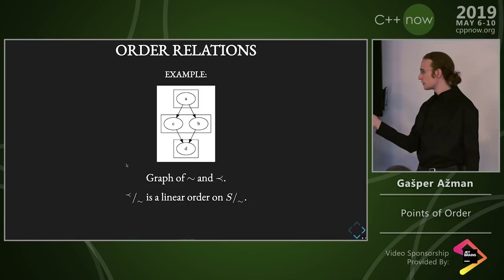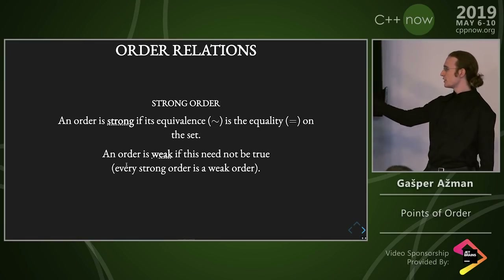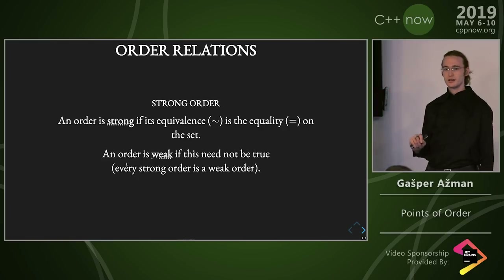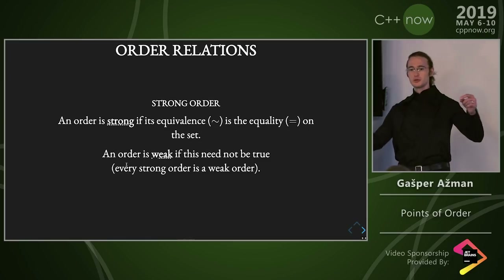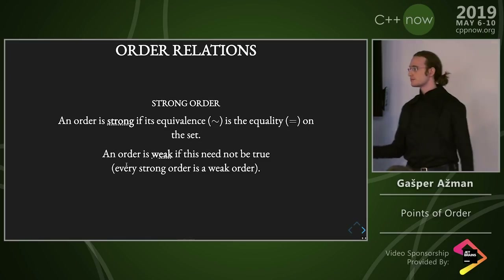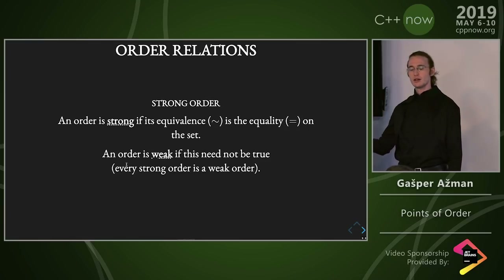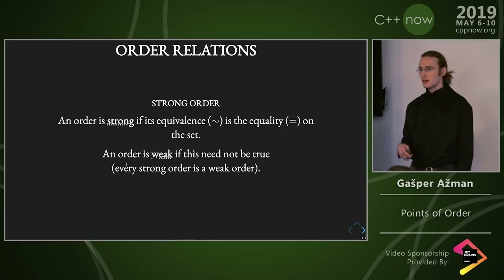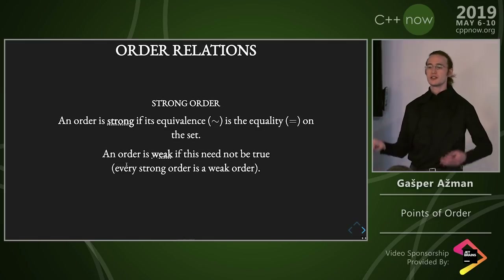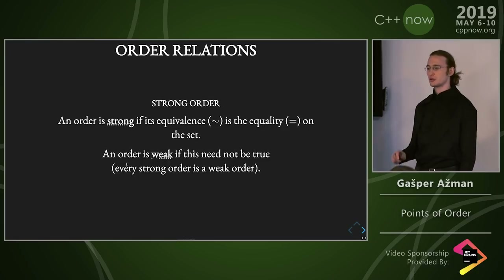A partial order does not induce an equivalence — and I'll have a proof for you. I spent three hours on this and then totally found the counterexample, and I was like 'I was so stupid.' That's why I have a proof on the slides, because it's not obvious even though it's super obvious in retrospect. So an order is strong if the equivalence is the equality on the set. An order is weak if this need not be true — so every strong order is a weak order, but not the other way around. If you're doing std::sort, you're going to require a weak order but expect a strong order in the vast majority of cases.